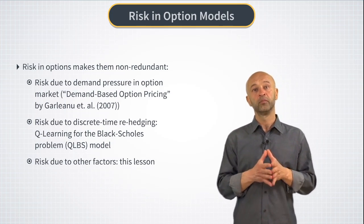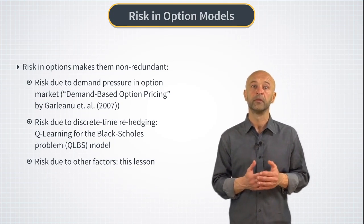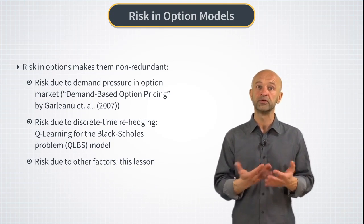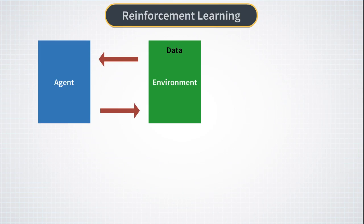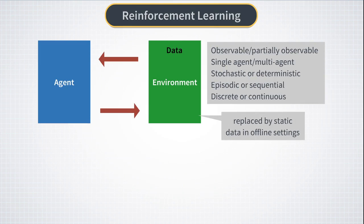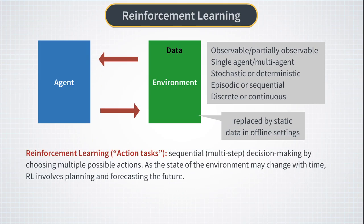The topic of this lesson is to talk about other origins of risk in option pricing and trading, as well as interconnections between the option and stock markets. Let's start with a diagram we discussed many times in this specialization — namely a diagram that shows the interaction of an agent with the environment. Reinforcement learning solves the task of sequential decision-making that optimizes some goals expressed via a cumulative reward function.